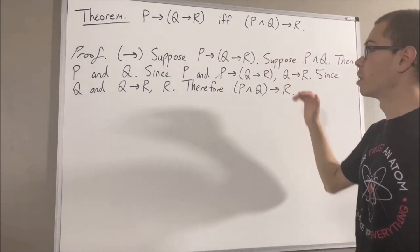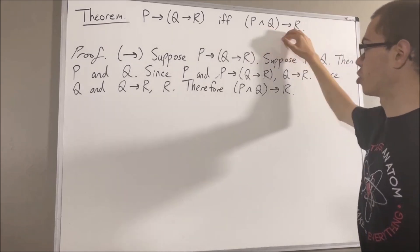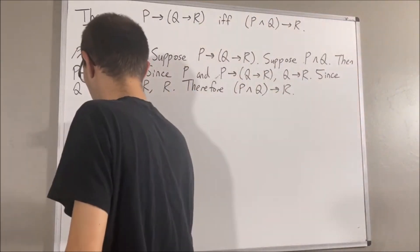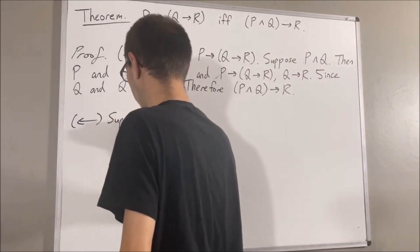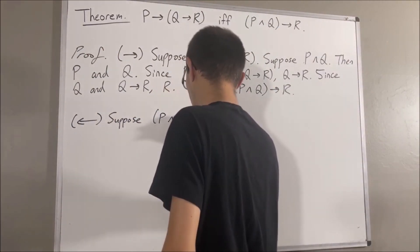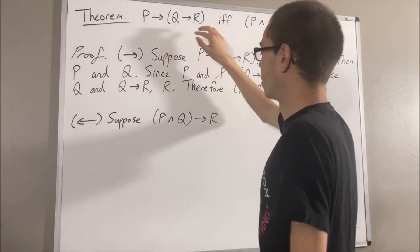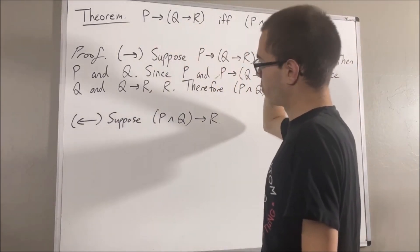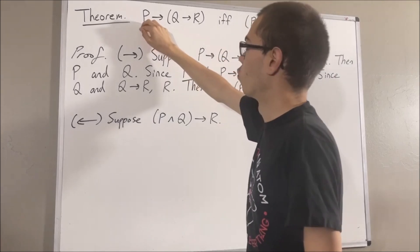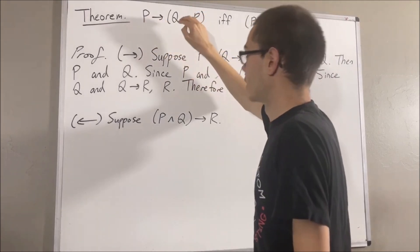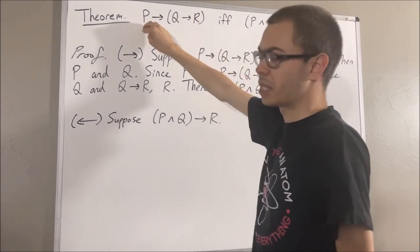So now let's prove the other direction. Let's prove if (P and Q) implies R is true, then P implies (Q implies R) is true. And to do so, suppose that (P and Q) implies R is true. From here, we want to prove P implies (Q implies R) is true. We're really trying to prove that under the assumption P is true, we have: if Q is true, then R is true. So let's suppose that P is true.